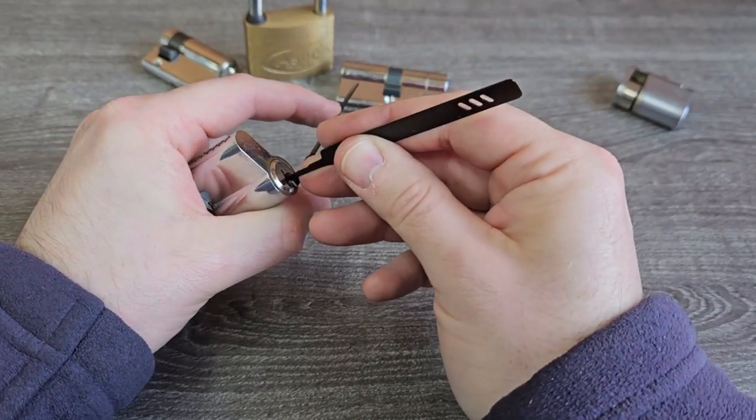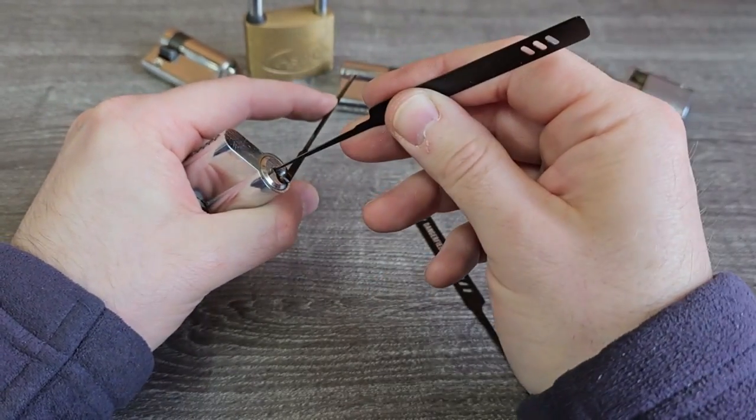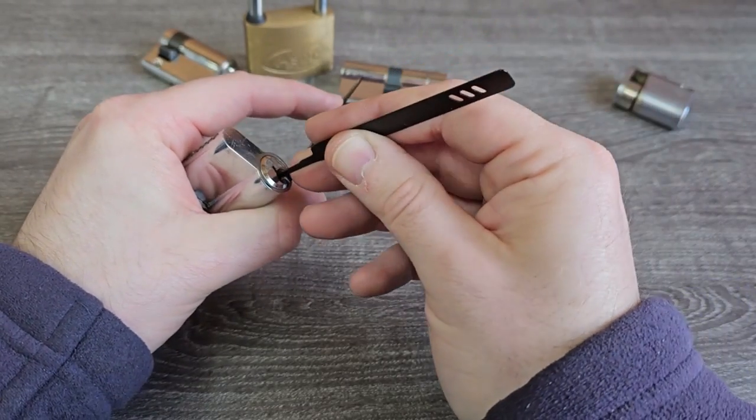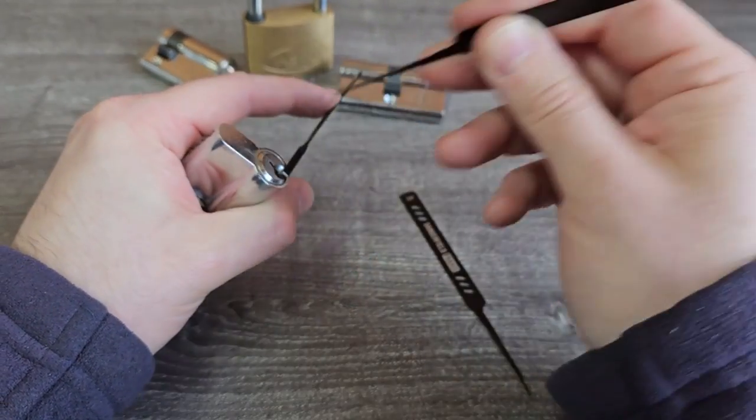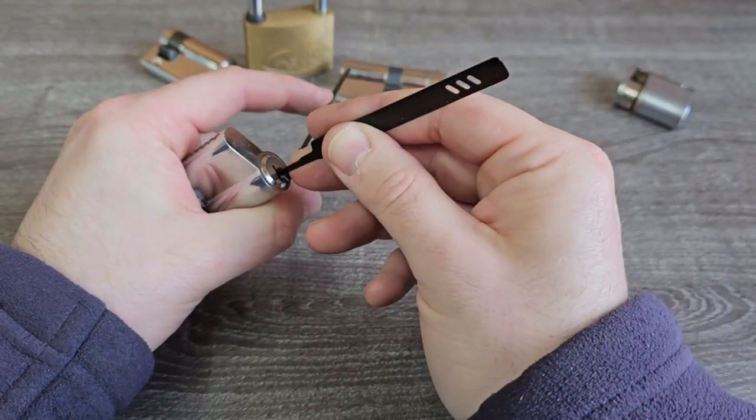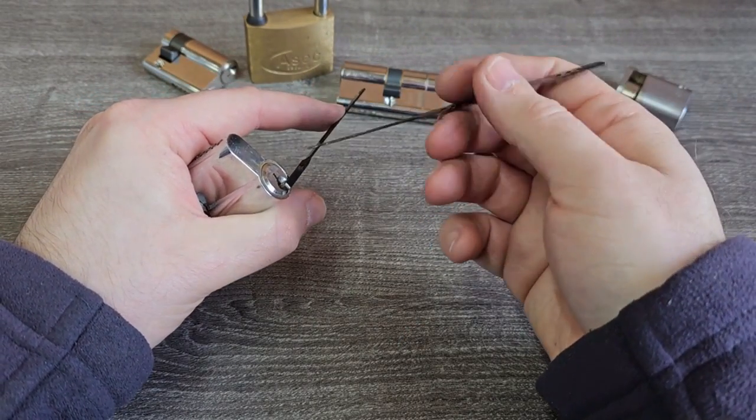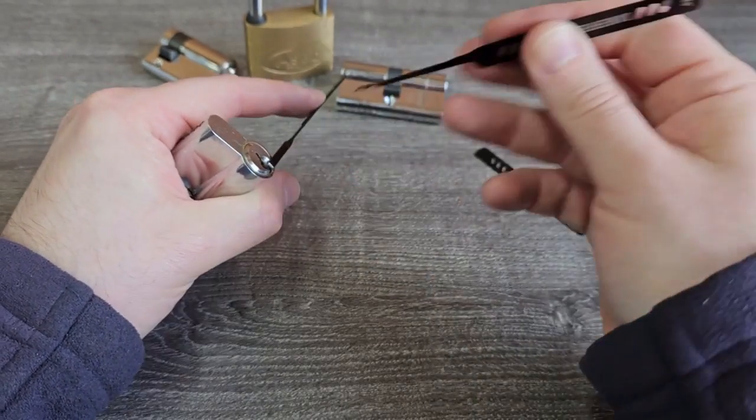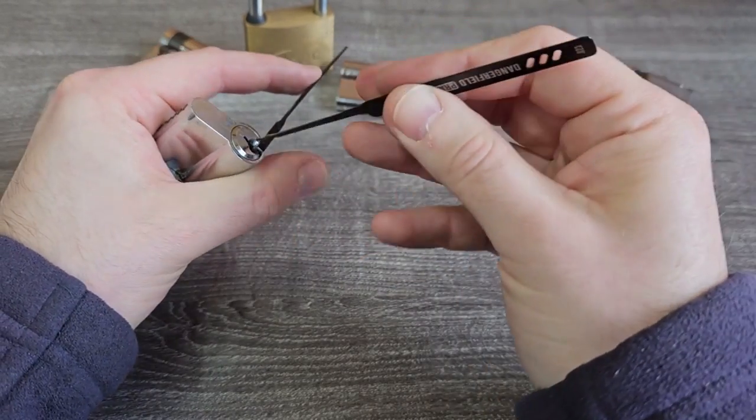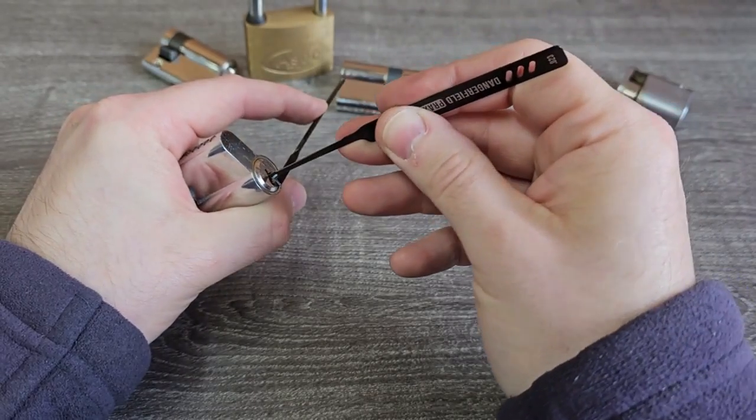As I pull it, that's when I apply the pressure on the tension tool. Not too much - and what is too much? If it's not working, change it. Maybe like I've just changed to the S-rake.